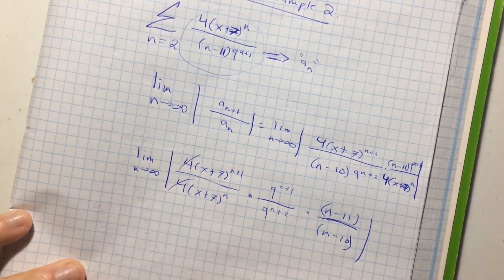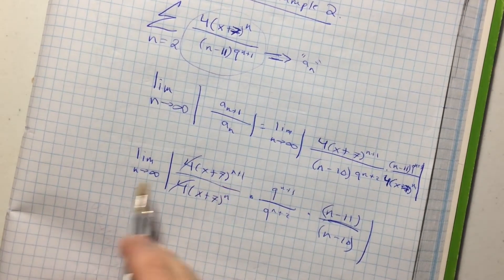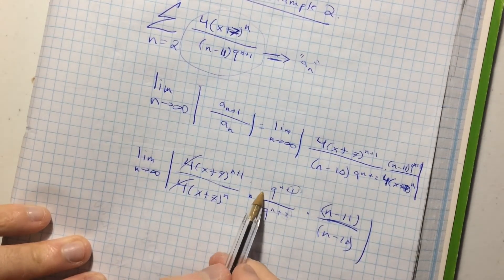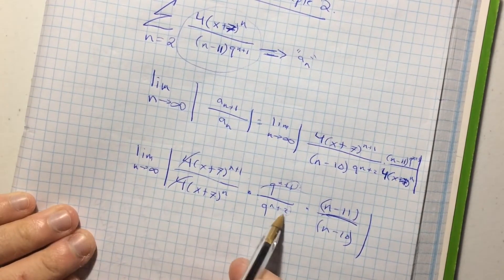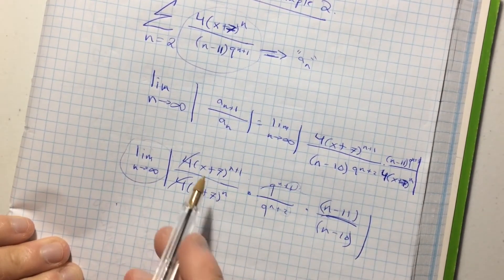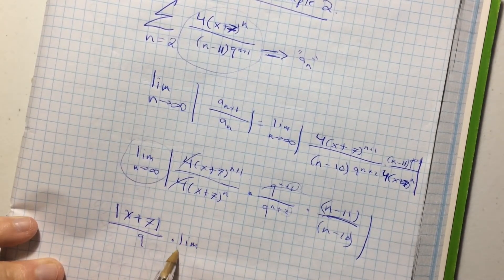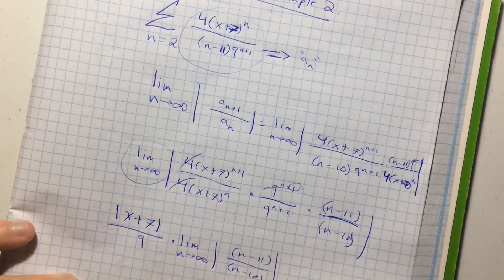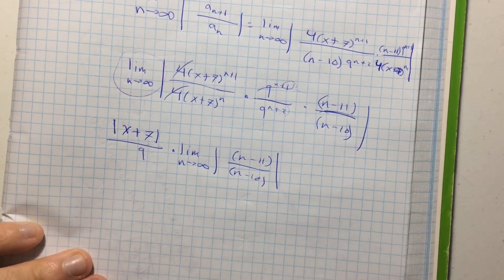Now I have 4s that cancel out with each other. I have x plus 7 to the n plus 1. So I have one extra x plus 7 on top. So I can chuck him in front of the limit. And I have an extra 9 on the bottom because there's a plus 2 here. This is plus 1. So this 9 was cancelled. And I'll just be left with 9 to the power of 1 on the bottom. So it's really, I'm taking x plus 7 to the left of the limit and 9 to the left of the limit because it does not depend on n. So whenever you take something out of the side of this limit, you have to take the absolute value of it. So the absolute value of x plus 7 over 9 times the limit as n approaches infinity of n minus 11 over n minus 10. And I know my handwriting is atrocious and my video making skills are trash. What do you know? I'm just a teenage dirtbag.